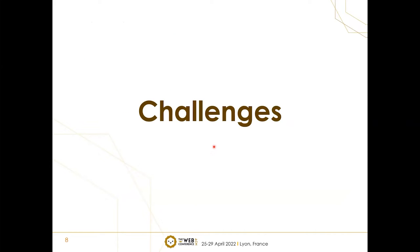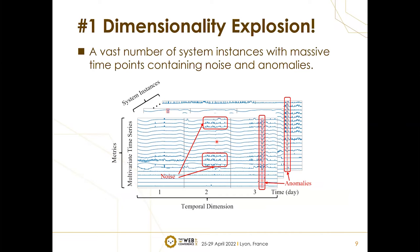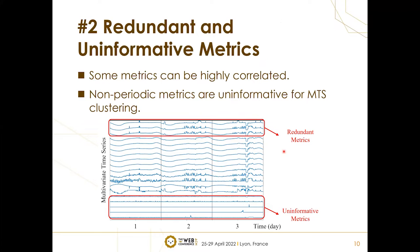There are three major challenges for good MTS clustering. First, a large-scale web service really contains millions of system instances, each of which has many monitoring metrics, often collected at fine granularity. Current clustering algorithms usually consume many computational resources for large-scale MTS data. Additionally, we need to cluster MTS based on normal patterns, whereas there are lots of noise and anomalies in them. Some metrics in MTS can be highly correlated, such as CPU-related metrics that typically manifest very similar patterns. Moreover, operators usually find that non-periodic metrics are uninformative for MTS clustering and thus should be removed.